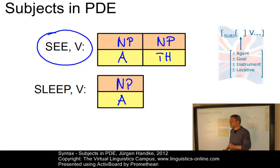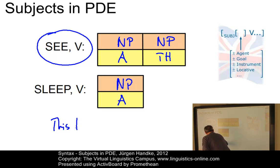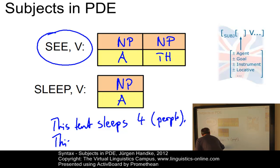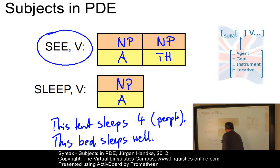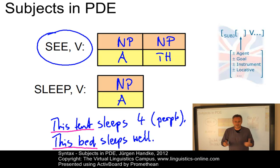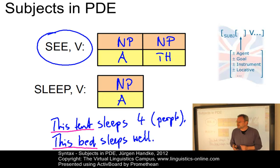But what about sentences such as 'this tent sleeps four', meaning four people, or 'this bed sleeps well'? Obviously, the two subjects — 'this tent' and 'this bed' — are no longer agents. What about these sentences with their non-agentive subjects? Are they exceptions, or do they follow some general principles of subject selection in present-day English? This e-lecture makes an attempt to find out what is going on in such sentences.